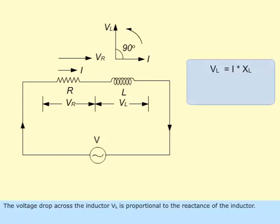The voltage drop across the inductor, VL, is proportional to the reactance of the inductor. VL leads the current by 90 degrees.